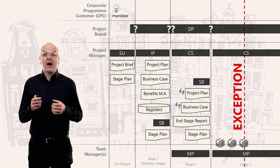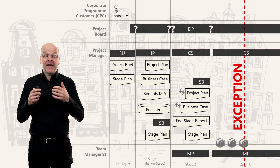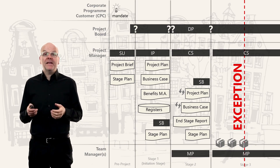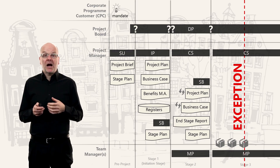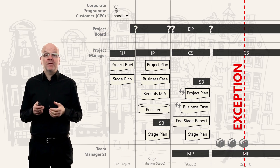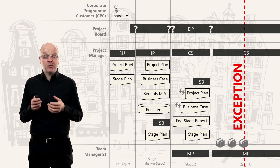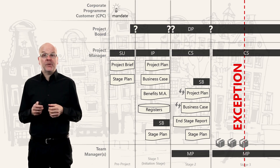The project manager can deal with most issues because they remain small, but some issues are big and are exceptions. Let's say that during the stage our cost tolerance was 10 percent and we now have an issue which will bring the costs up to 20 percent.